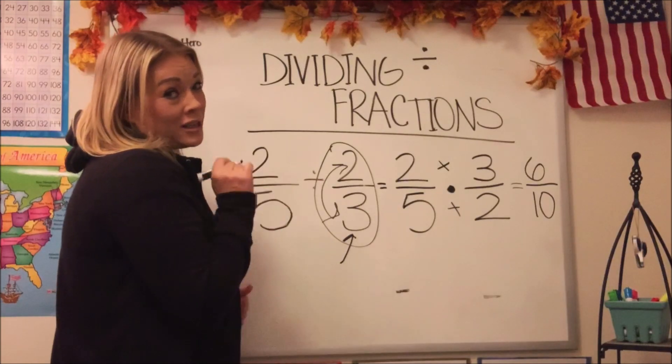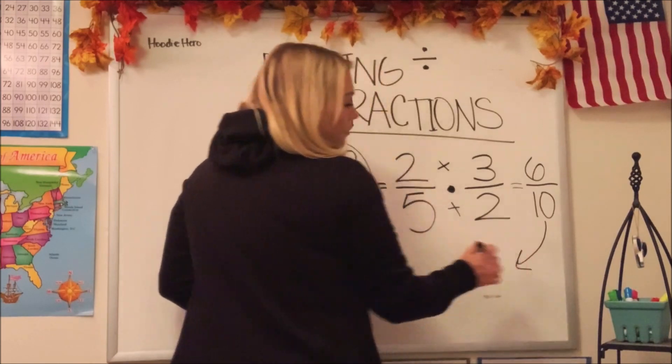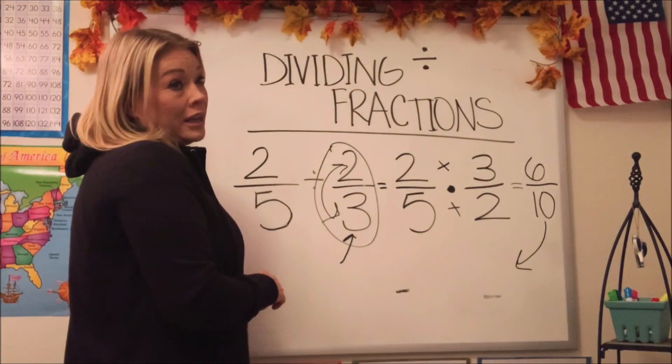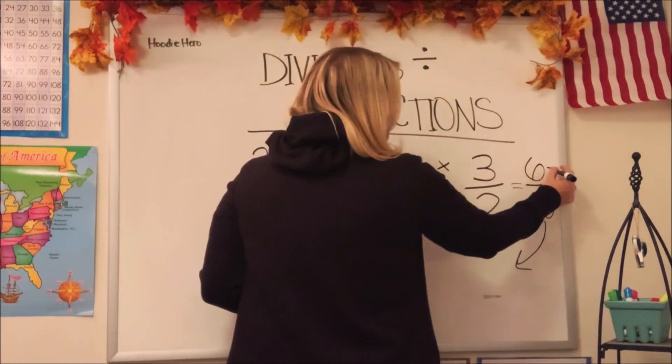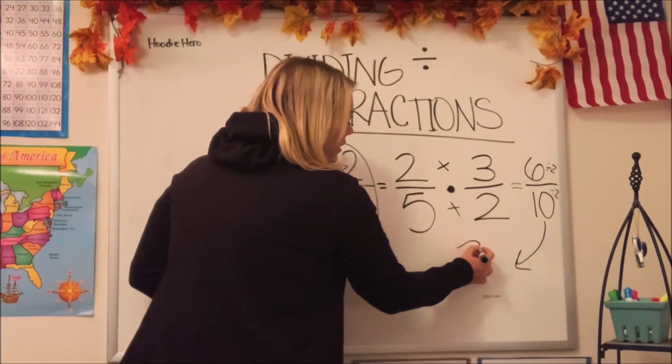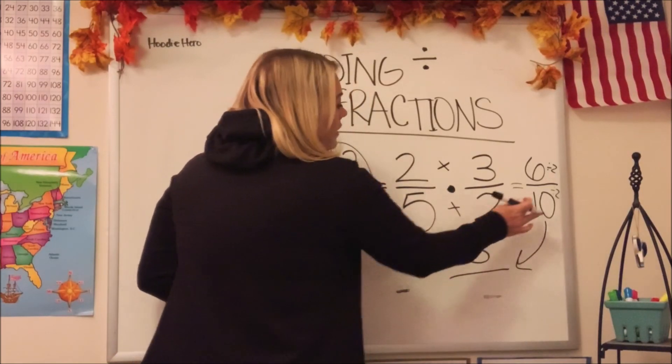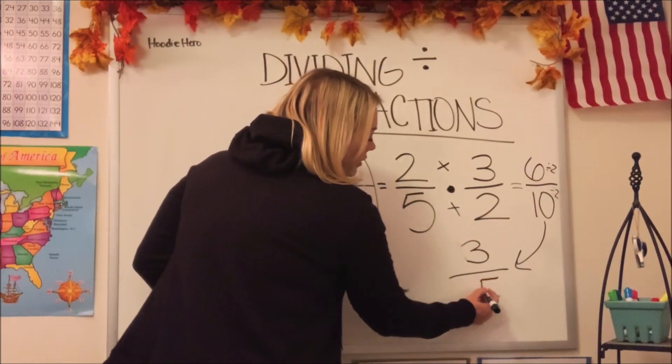Now you know that's not going to be our answer, is it? Because these are both even numbers, which means we can simplify. We could simplify each of them by two, couldn't we? So let's go ahead and do it. Six divided by two is three. And ten divided by two is five.